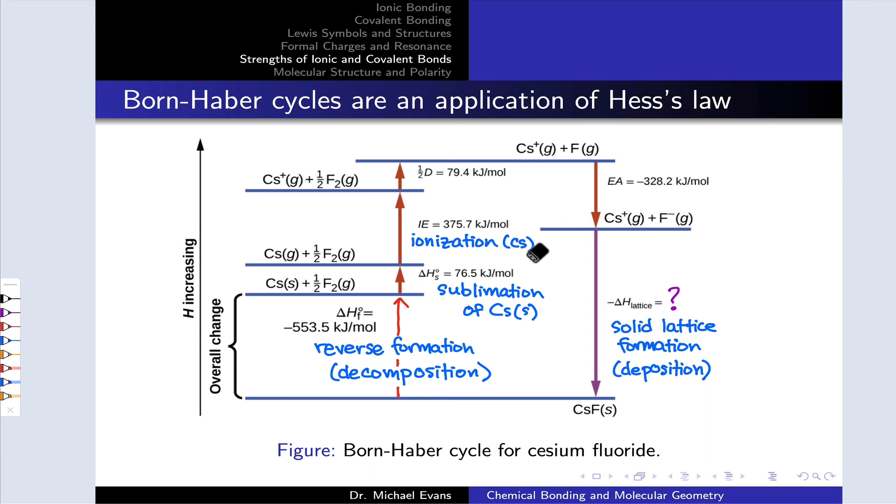We can then break up the fluorine molecules into individual fluorine atoms. That's bond cleavage, half the bond dissociation energy for F₂, where the one-half comes from the half a mole we're dealing with. And then we can give an electron to the F atom, and that is electron capture associated with the electron affinity of fluorine.